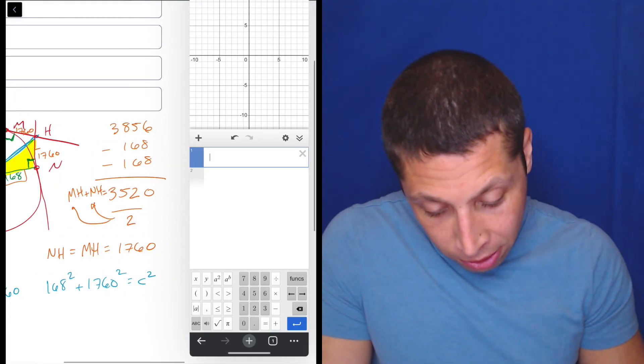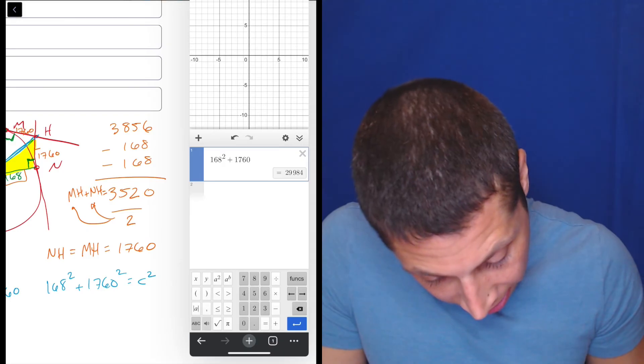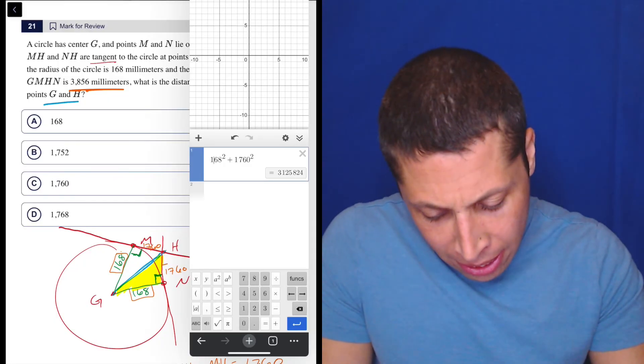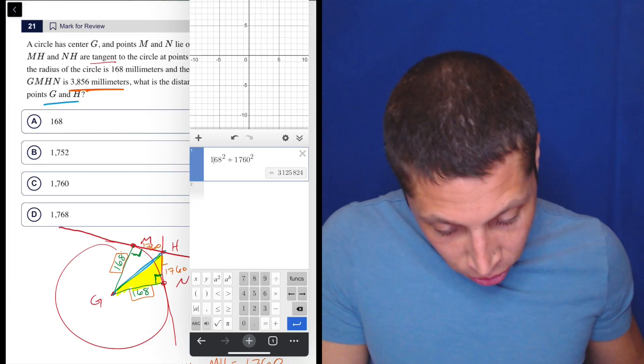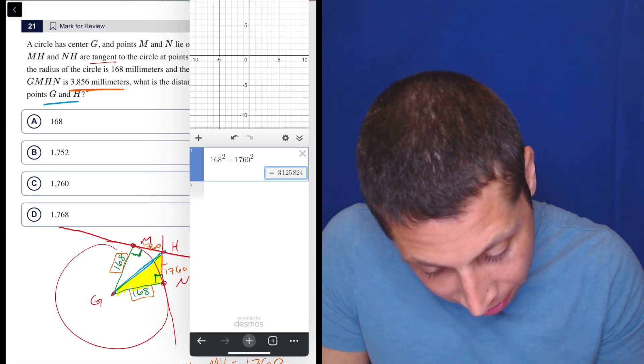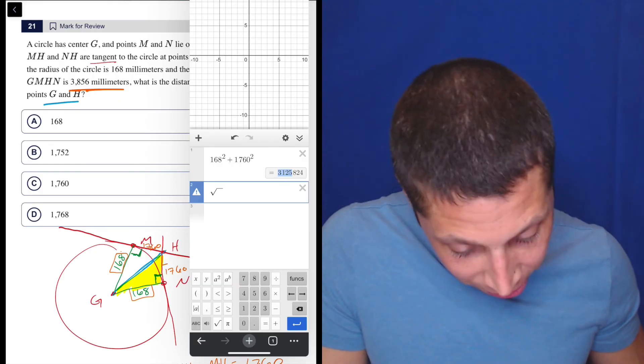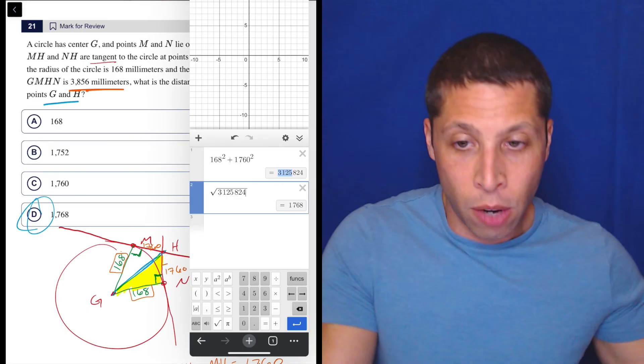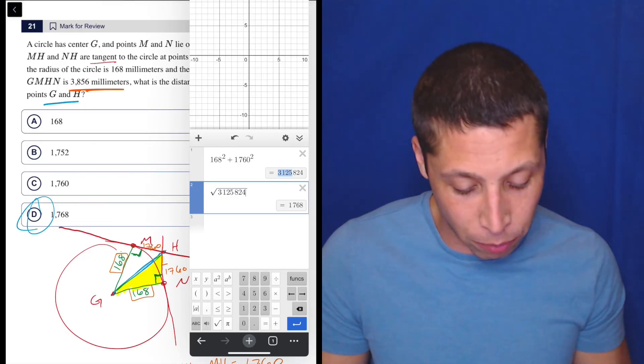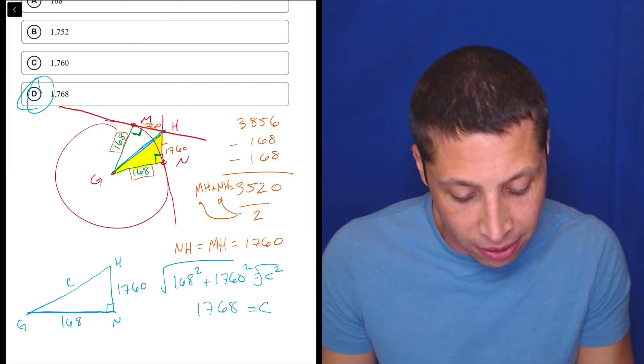This is now just basic Pythagorean theorem. We're looking for C, the hypotenuse of this right triangle. So let's just do it: 168 squared plus 1760 squared is equal to C squared. So here I might go to Desmos. We've got 168 squared plus 1760 squared. So it's a really big number. Luckily that's not an answer because sometimes people forget to take the square root of that. Let me copy and paste under the square root. There we go, 1768, choice D. That's the answer. So you're going to get the square root of both of these things, and that gives you C of 1768. And that's your final answer.